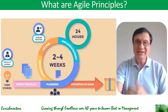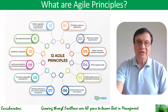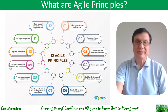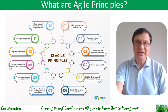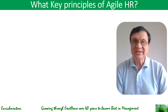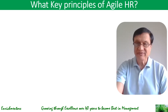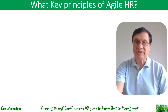So what are the key Agile principles? There are 12 of them that originally came from software development. Let's look at some of the ones that are key to HR. There are five key principles in Agile HR that we will talk about here.